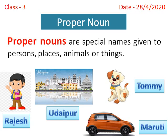Let's take some examples to understand this. The first picture is of a boy. Boy is a general name, so it is a common noun. But Rajesh is a proper noun because it is a special name given to a particular boy.